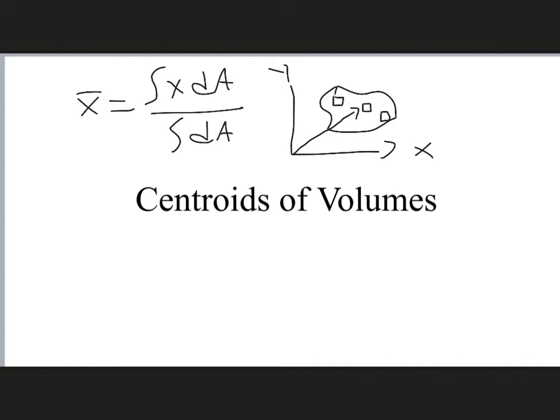But we can also talk about centroids of three-dimensional objects. And so, we could have a z-axis out here, and this could be some sort of three-dimensional volume. And so, these would not be little segments of dA, but they would be little segments of dV. And so, that's what we want to look at how to handle. How do we deal with centroids of volumes, not just areas?